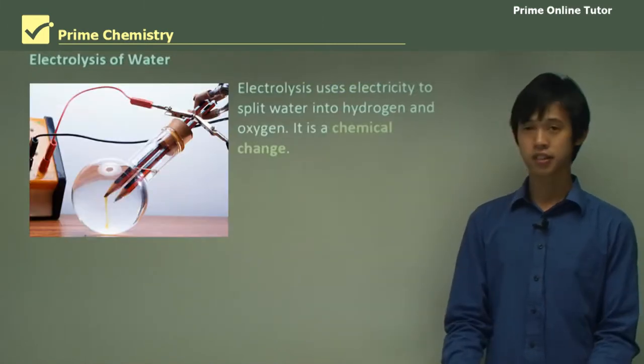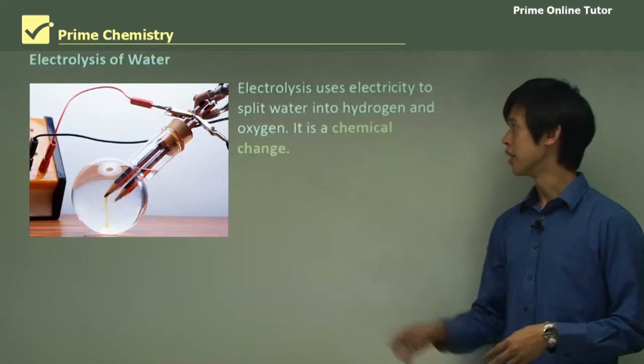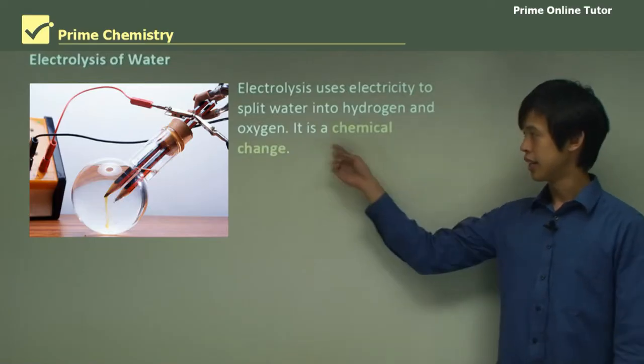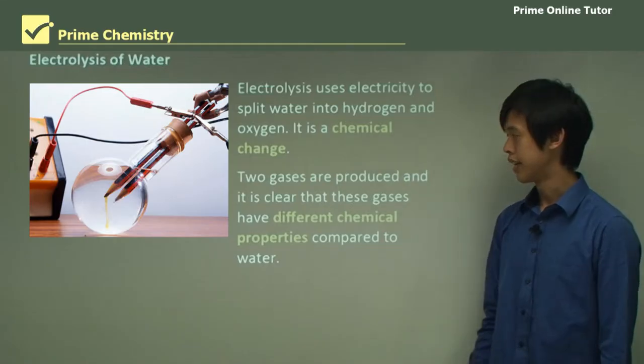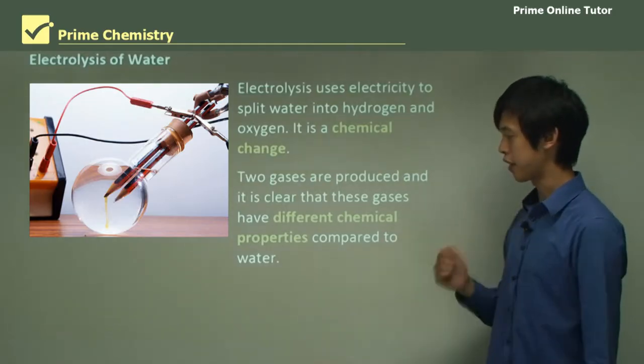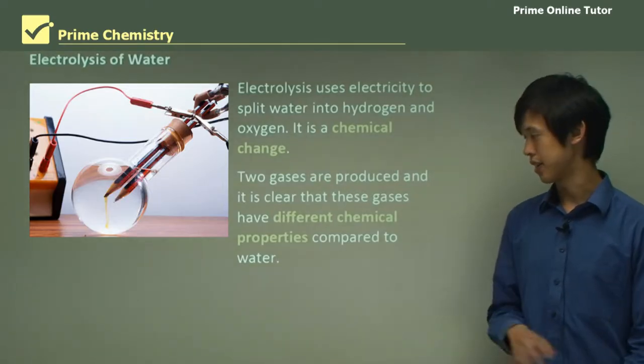Now electrolysis of water on the other hand: electrolysis uses electricity to split the water molecule into hydrogen and oxygen gas. And this is definitely a chemical change. Two gases are produced, and it's clear that these gases have different chemical properties compared to water.